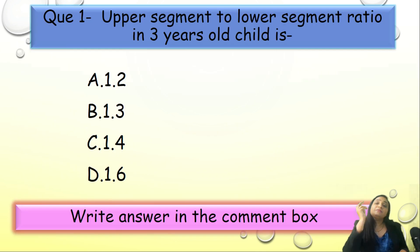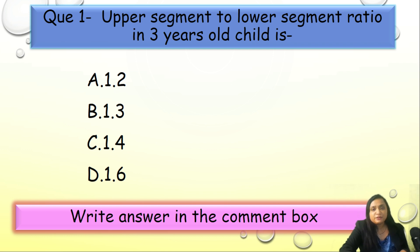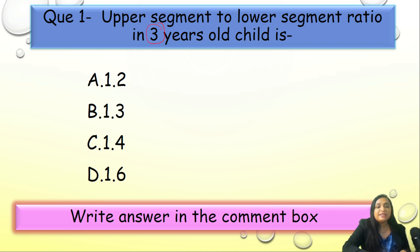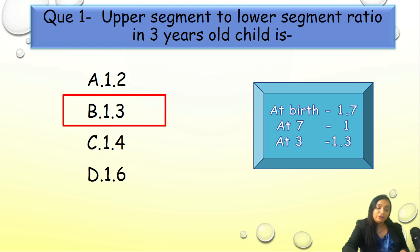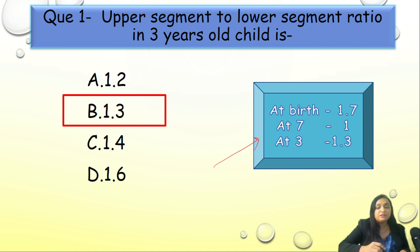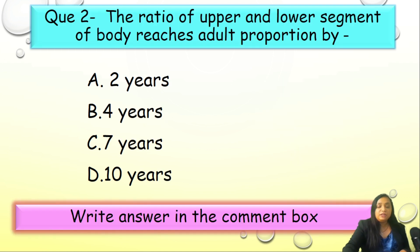Trivia time: Question 1 — the upper to lower segment ratio in a three-year-old child. Options: a) 1.2, b) 1.3, c) 1.4, d) 1.6. The correct answer is b) 1.3. Remember the mnemonic: at birth it is 1.7, at 7 it is 1, and at 3 it is 1.3.